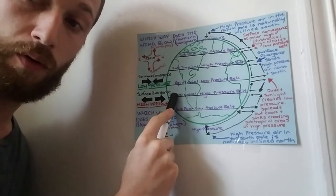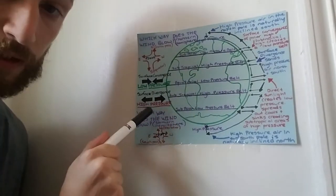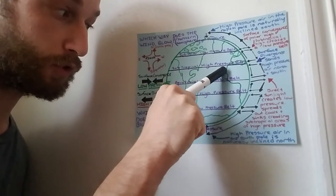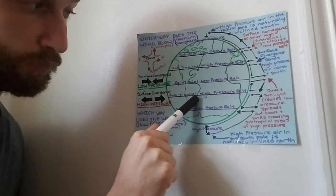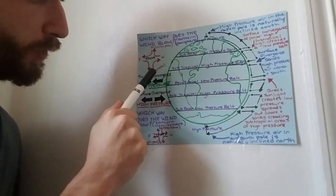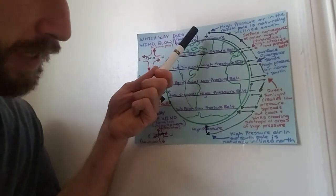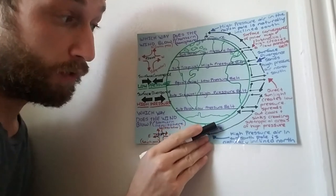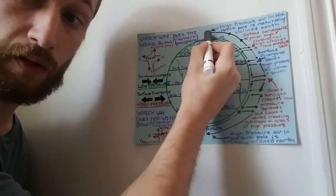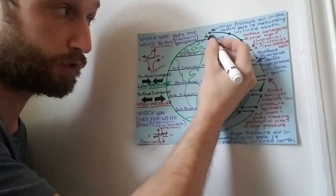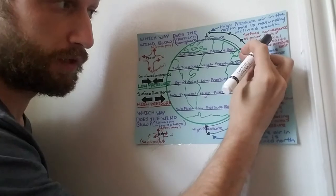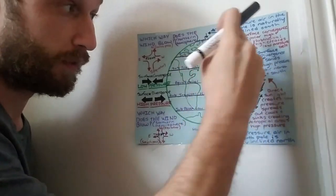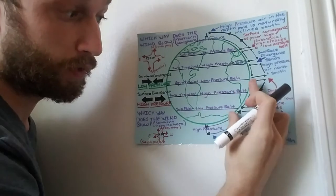Next, to understand why the belt north of the subtropical high pressure belt and the belt south of it is low pressure, this is because of convergence. Air from the north pole and air from the south pole, being cold, have high pressure. They travel toward lower pressure regions and come into contact with diverging air coming from the subtropical high pressure belt. These two air masses come into contact with one another.